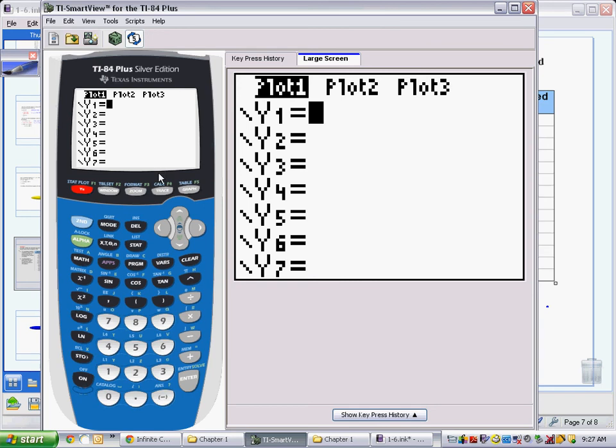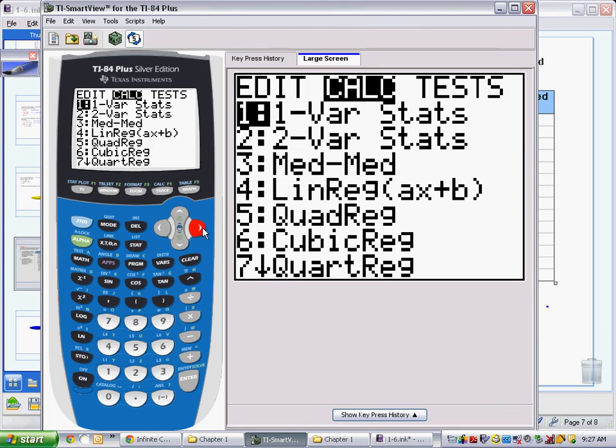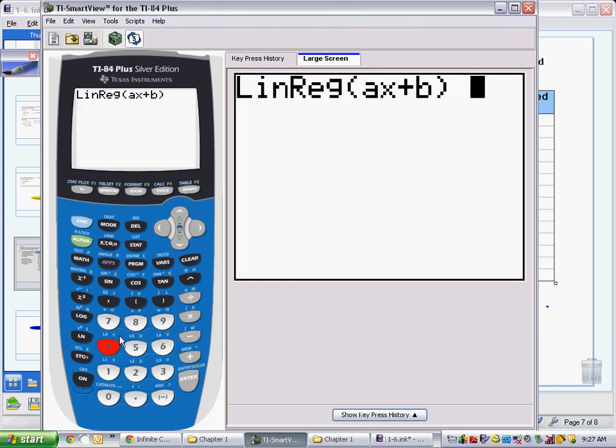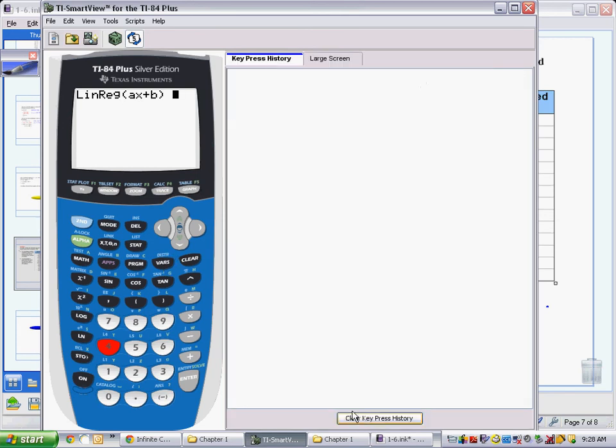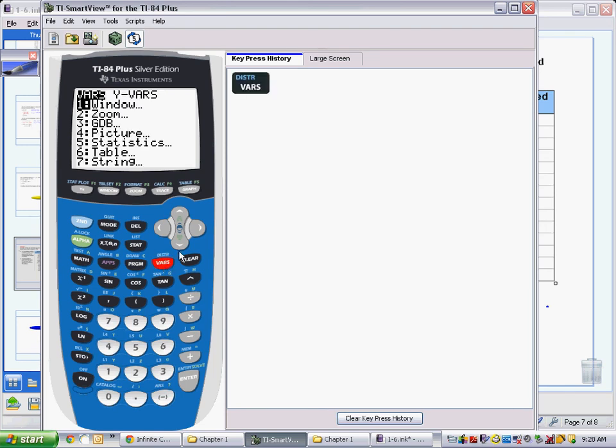Or I can, if I know that I want to put it in there, when I do the stat, calculate, linear regression, choice number 4, I can actually tell it to go ahead and put that into my function screen, the y equals. By selecting varse, let me go to the key press history here so you can see it, varse, move over to y varse, and choose number 1, function.